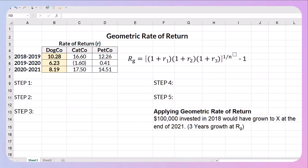So I have the rate of return over three years for three companies: DogCo, CatCo, and PetCo. What I want to find is the geometric rate of return. So I'm going to use DogCo for my example.